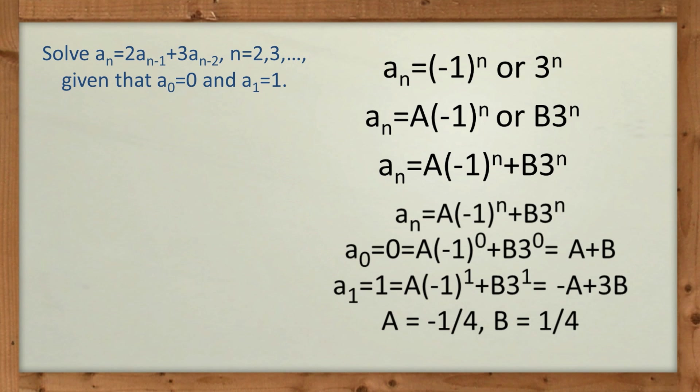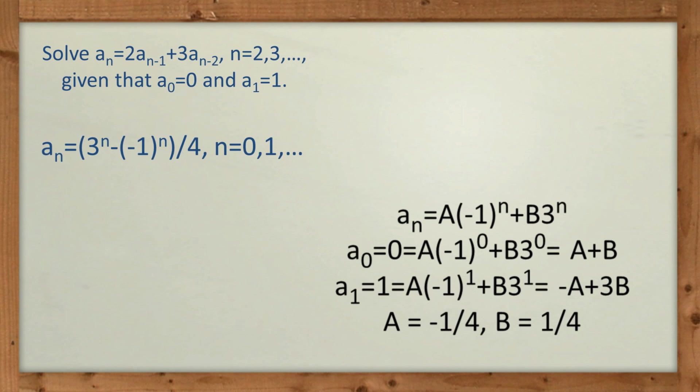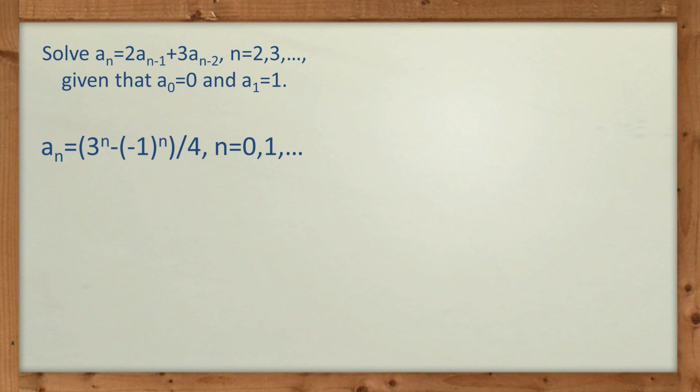And so when we put that all together, we now have the big A and the big B, we've got our solution that A_n equals, and you can see there, 3^n minus (-1)^n, all divided by 4. And that works for n equals 0, 1, 2, 3, etc.